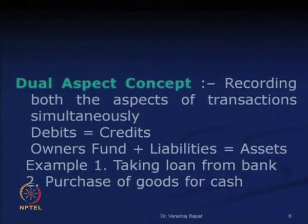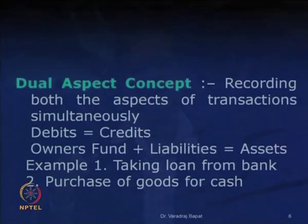The second example is purchase of goods for cash. Here we are giving cash, so cash balance falls and as cash balance falls, our inventory balance rises. Again because of the dual aspect, the balance sheet equation is maintained.